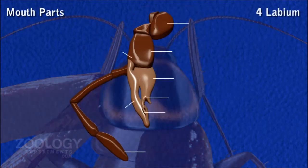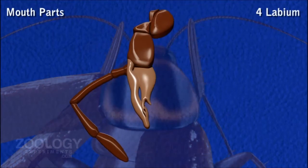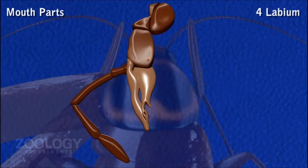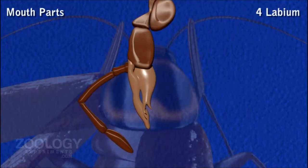Labium. Labium consists of crypeas, torma, setae and labrum.